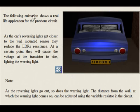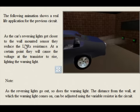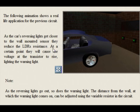The following animation shows a real-life application for the previous circuit. As the car's reversing lights get closer to the wall-mounted sensor, they reduce the LDR's resistance.